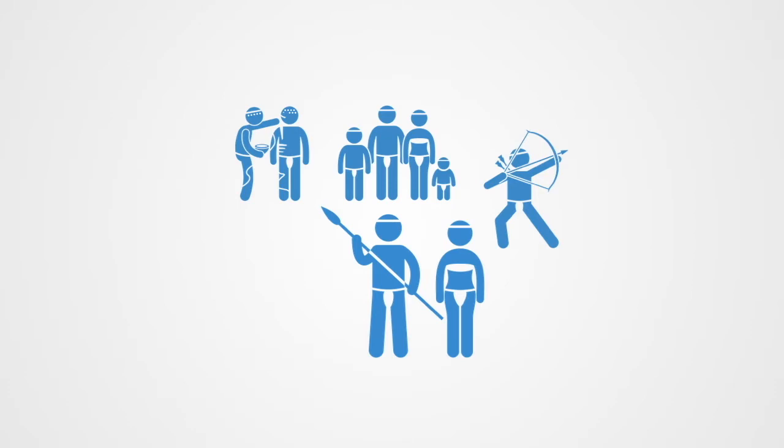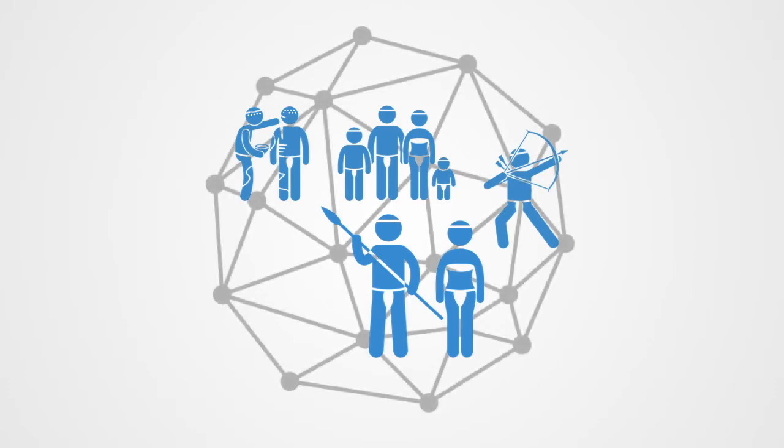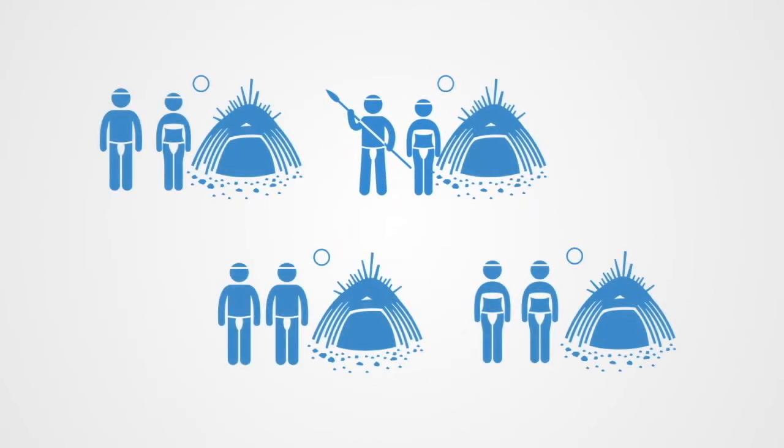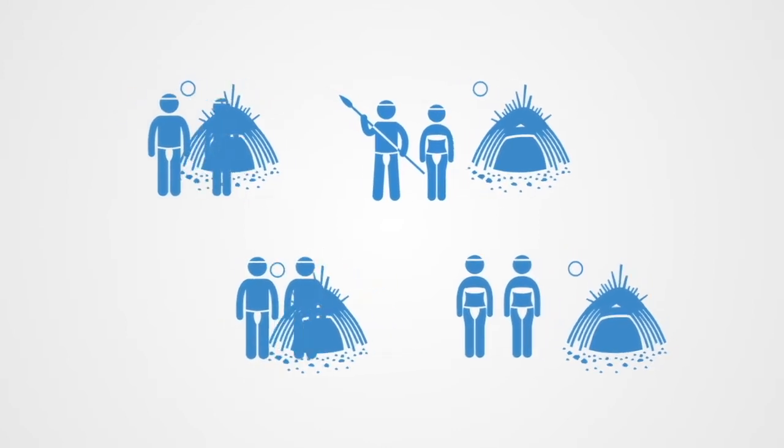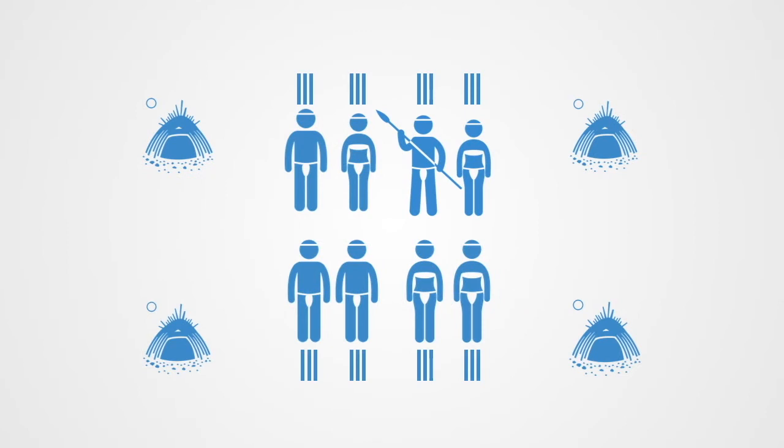They designed experiments to measure the social ties and social cooperation within the communities. To identify the social networks existing within the communities, they first asked adults to identify individuals they would prefer to live with within their next encampment. Secondly, they gave each adult three straws containing honey and were told that they could give these straws as a gift to anyone in their camp. This generated 1,263 campmate ties and 426 gift ties.